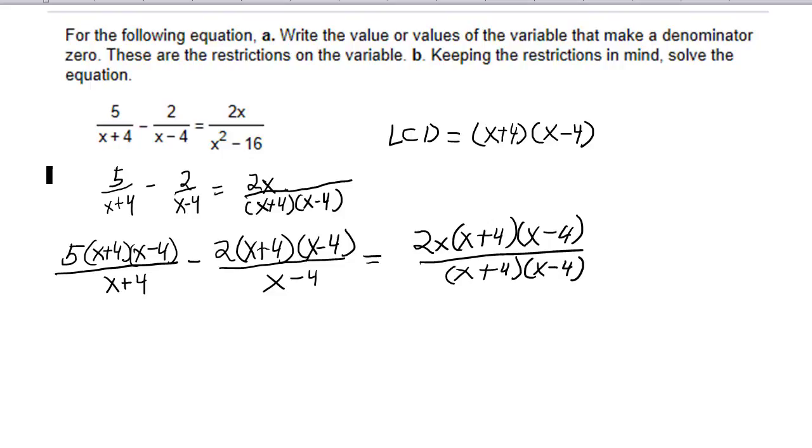And what that means for us is that we will get to cancel, which is one of my favorite things. So, the x plus 4s cancel right here, and the x minus 4s cancel right here, and the x plus 4s cancel, and the x minus 4s cancel, and so what I'll be left with is 5 times x minus 4 minus 2 times x plus 4 equals 2x. And now, I'm going to solve this equation.